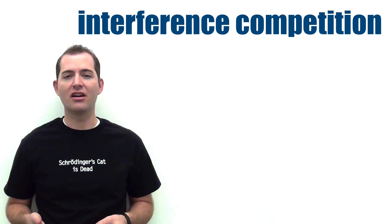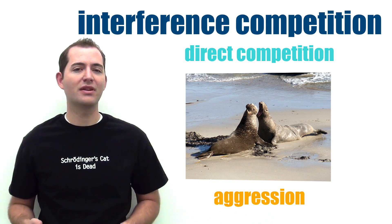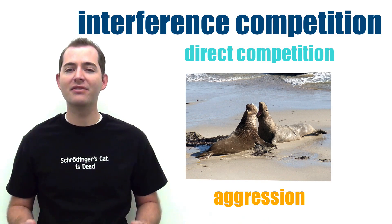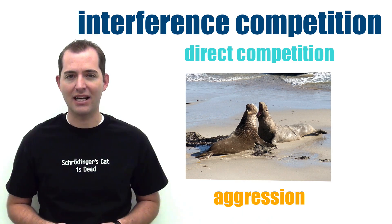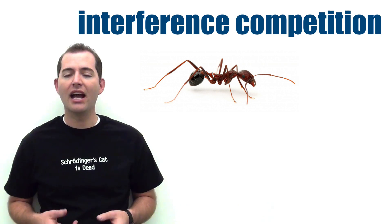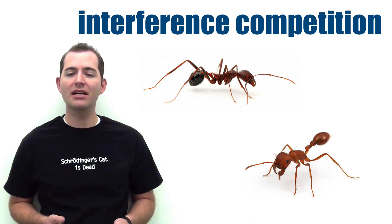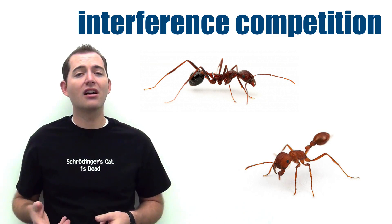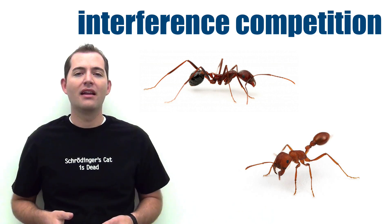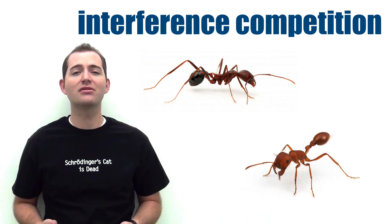Interference competition occurs directly between individuals through aggression, which interferes with the foraging, survival, and reproduction of others by physically preventing access to resources in the habitat. An example takes place between Novormesser coccorelli and red harvester ants. The Novormesser coccorelli actually plug the entrance holes of the red harvester ants' hill, delaying their emergence each morning and preventing access to resources.